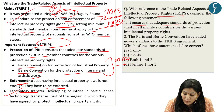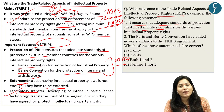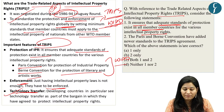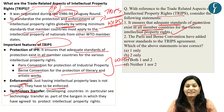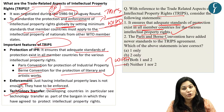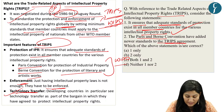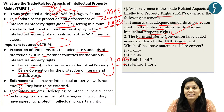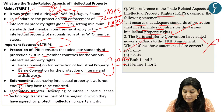Practice question on TRIPS: Statement 1 — it ensures adequate standards of protection across all member countries for various intellectual property rights — is correct. Statement 2 — Paris and Bern conventions have added newer standards to the TRIPS agreement — is incorrect, as these conventions predate TRIPS. Answer: Option A, only statement 1.